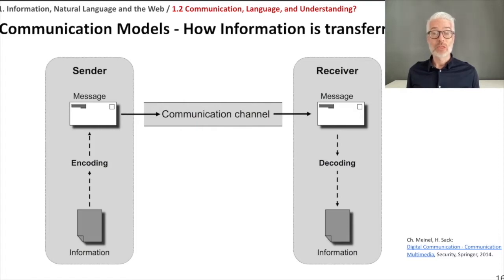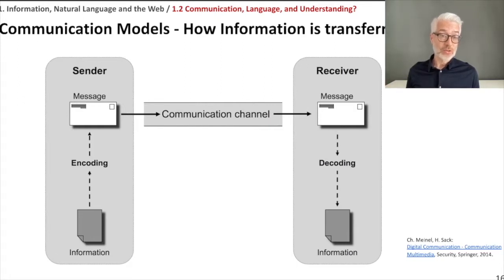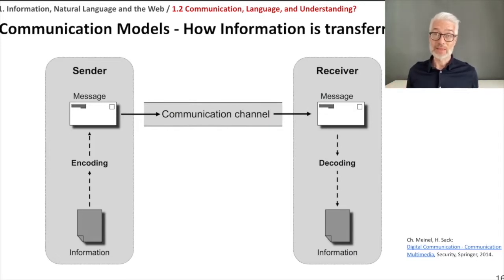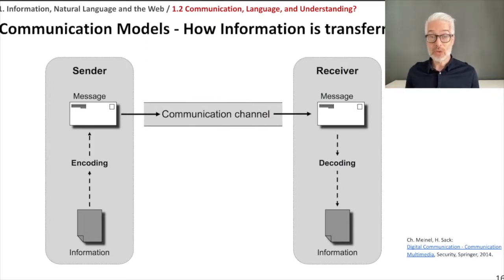You have the information in your mind. What you have to do is transmit this information in terms of a message. For that you encode the message into signals. For us humans these signals could be language, and to transmit it this could be speech. The communication channel would be the plain air between sender and receiver if they stand next to each other, or electronic signals transmitted via the internet. However, the receiver gets this message and has to decode it to reconstruct the information.